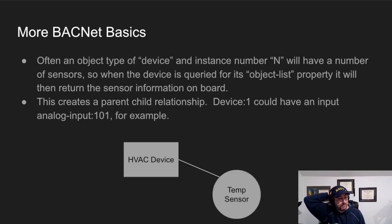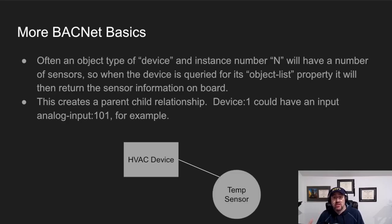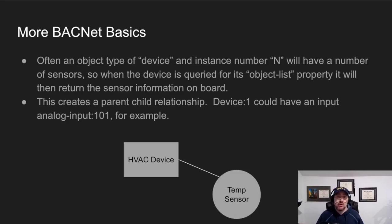Most times an object will have an object type of device, meaning a physical device as a human would think of it. Every BACnet object has an instance number on the network. An HVAC device that you put on your network might have 16 sensors in it, and each of those 16 sensors will look like other BACnet objects on your network, which makes things confusing in terms of how devices relate to each other.